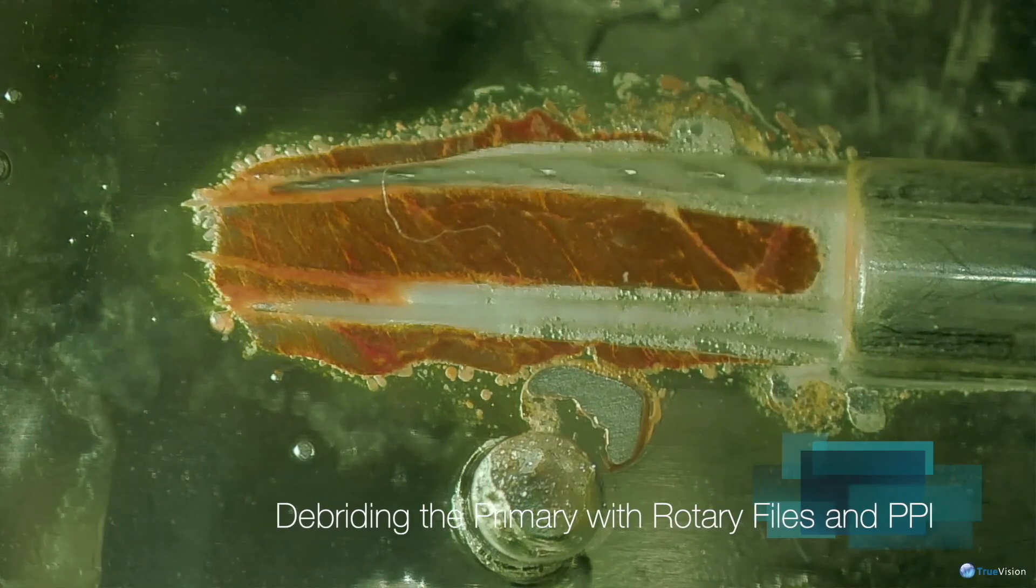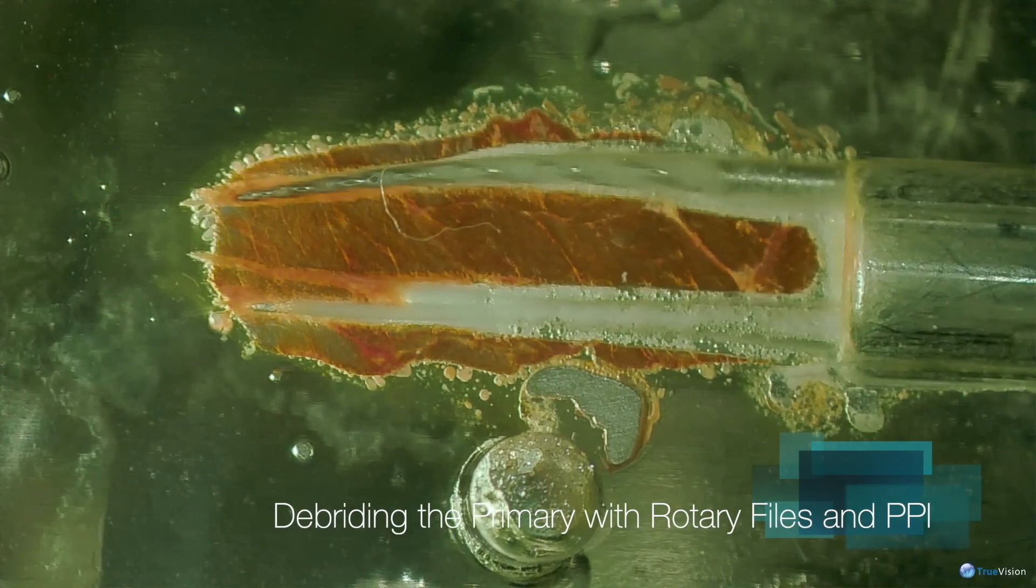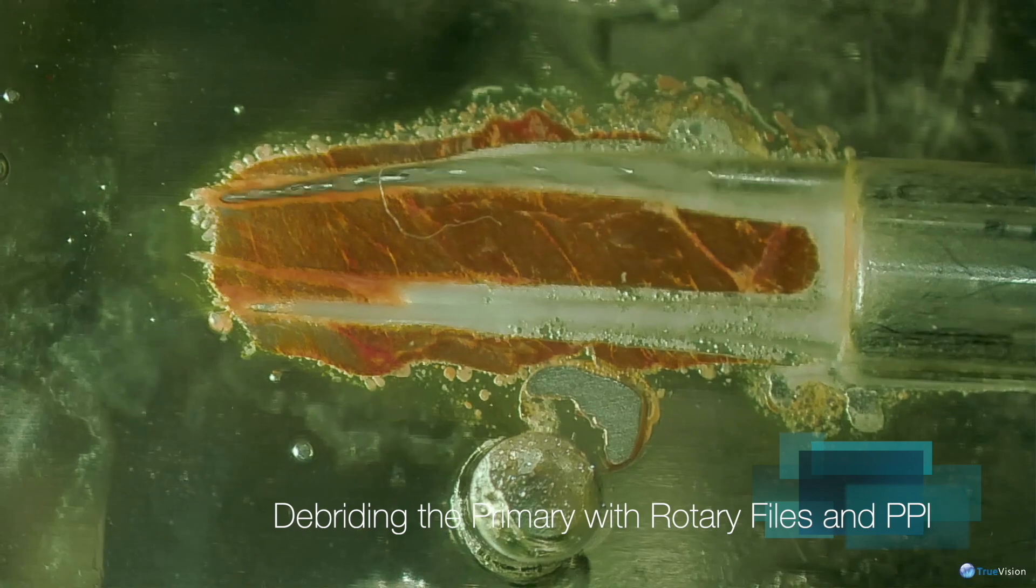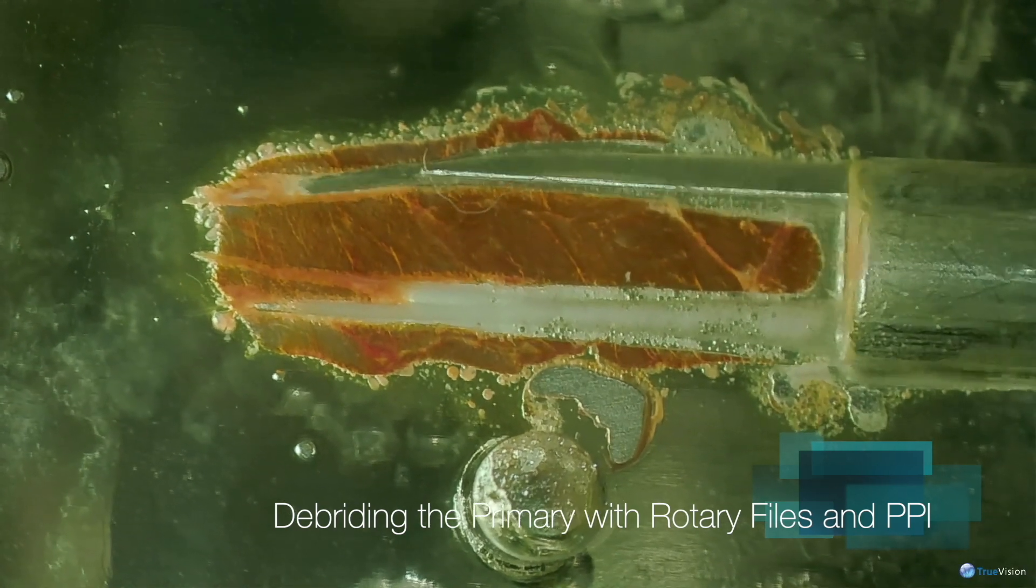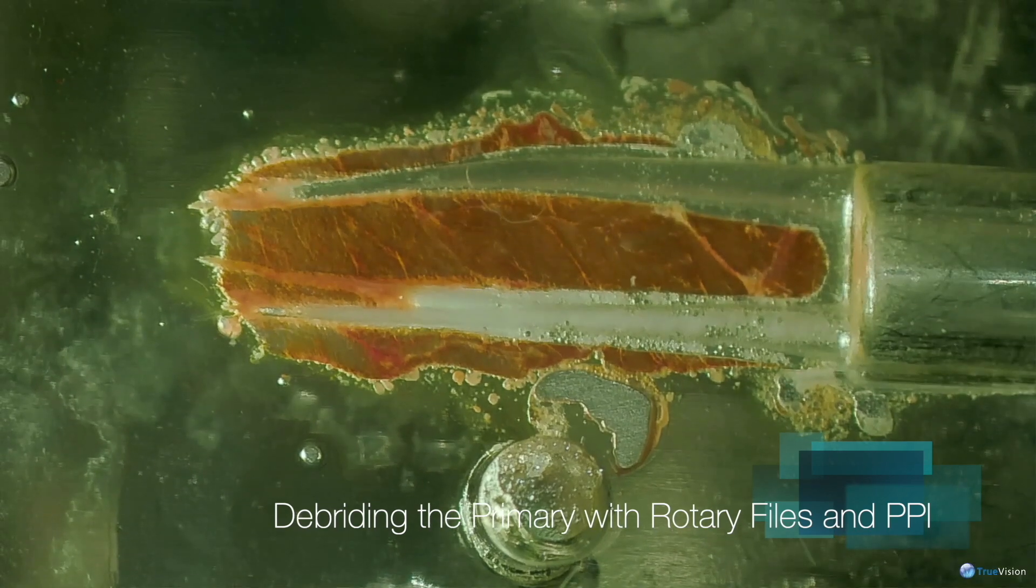Rotary files are brought in again, making a better pathway for the positive pressure irrigation needle. Here we are in the adjacent canal.